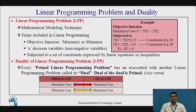Now let us see what is a linear programming problem and the dual. A linear programming problem is a mathematical modeling technique in which we have an objective function containing non-negative variables which are subject to constraints in the form of equality or inequality equations. This is an example showing the objective function and the constraints. There are two constraints present and x1 and x2 are the two decision variables, restricted by greater than or equal to zero.